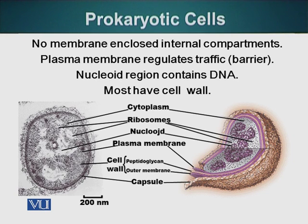The plasma membrane, as we saw, is fluid — it does not have a shape; it adapts the shape of whatever compartment is containing it. Bacterial cells are very small; they are the smallest type of cells, and they don't have any membrane-enclosed organelles.